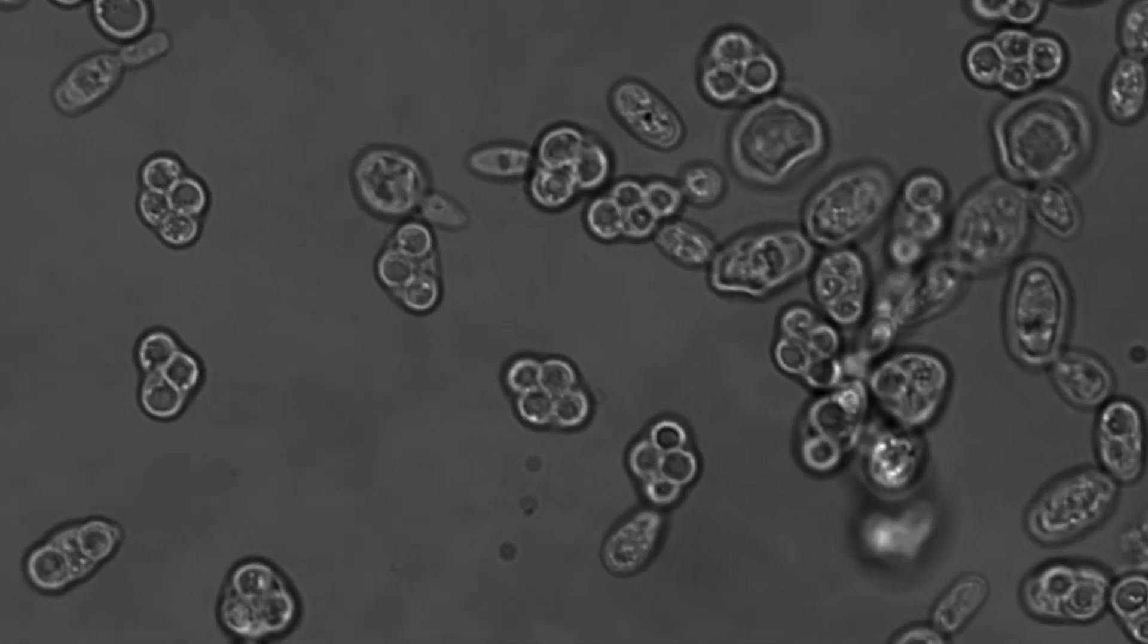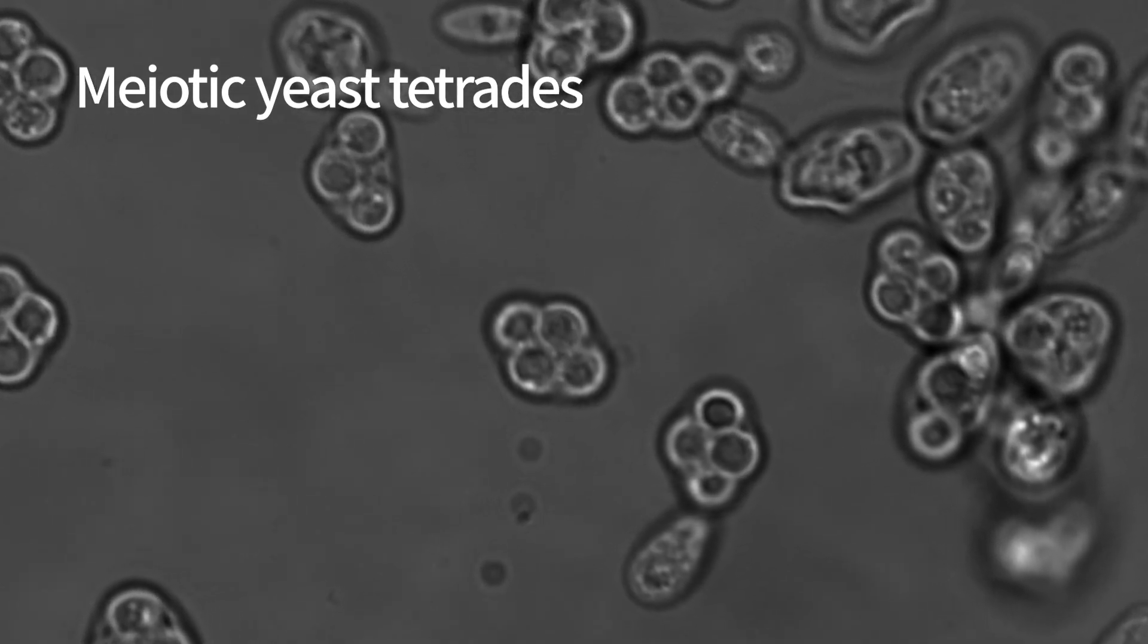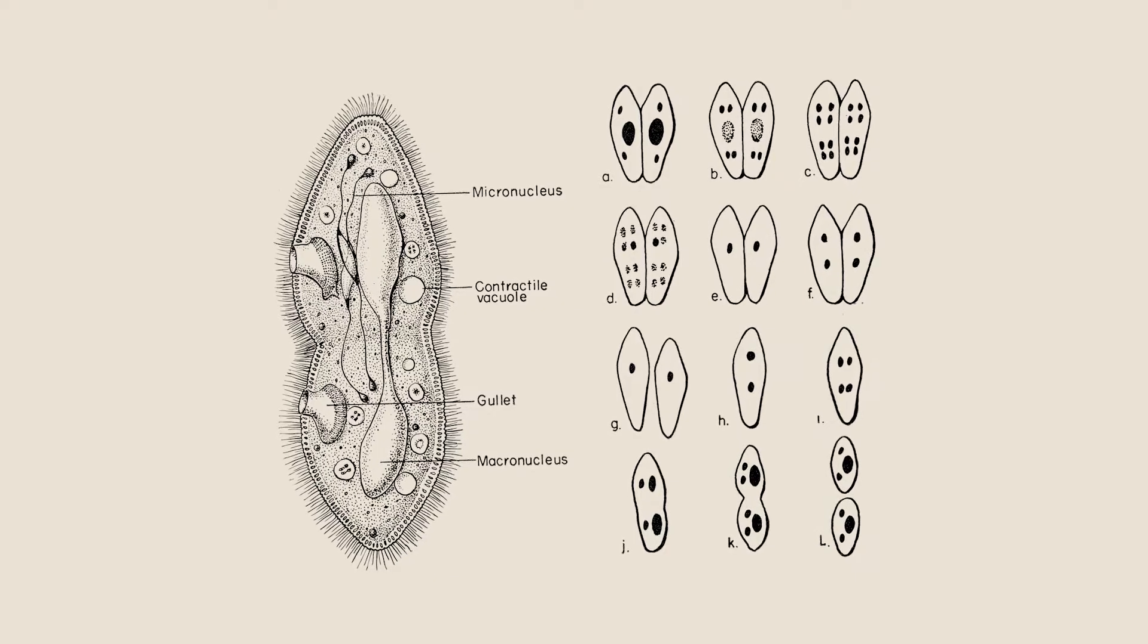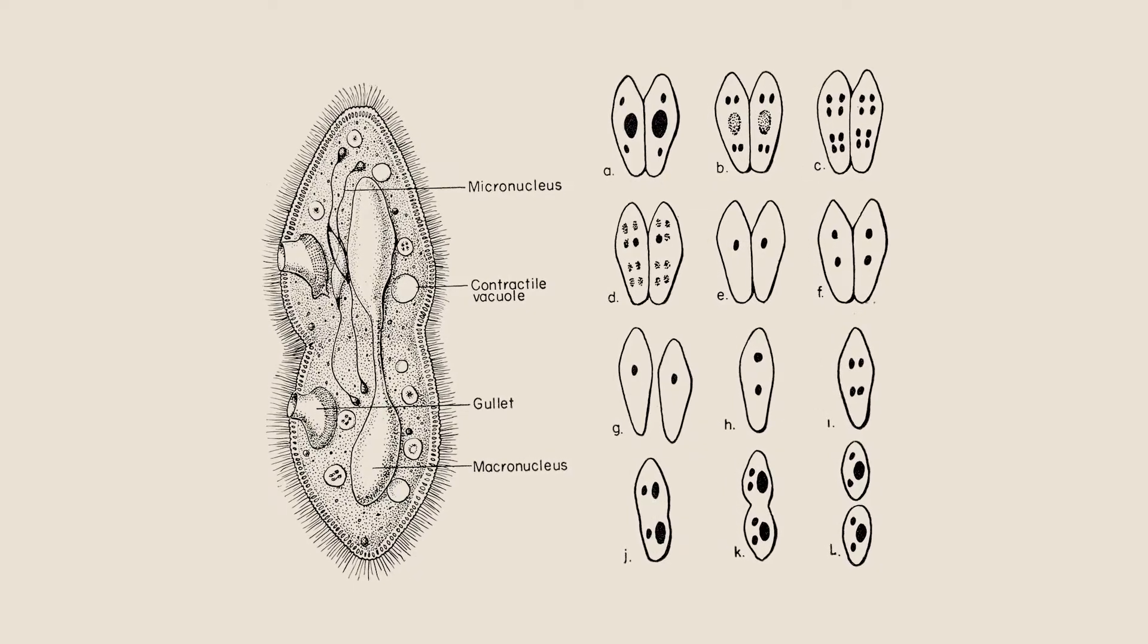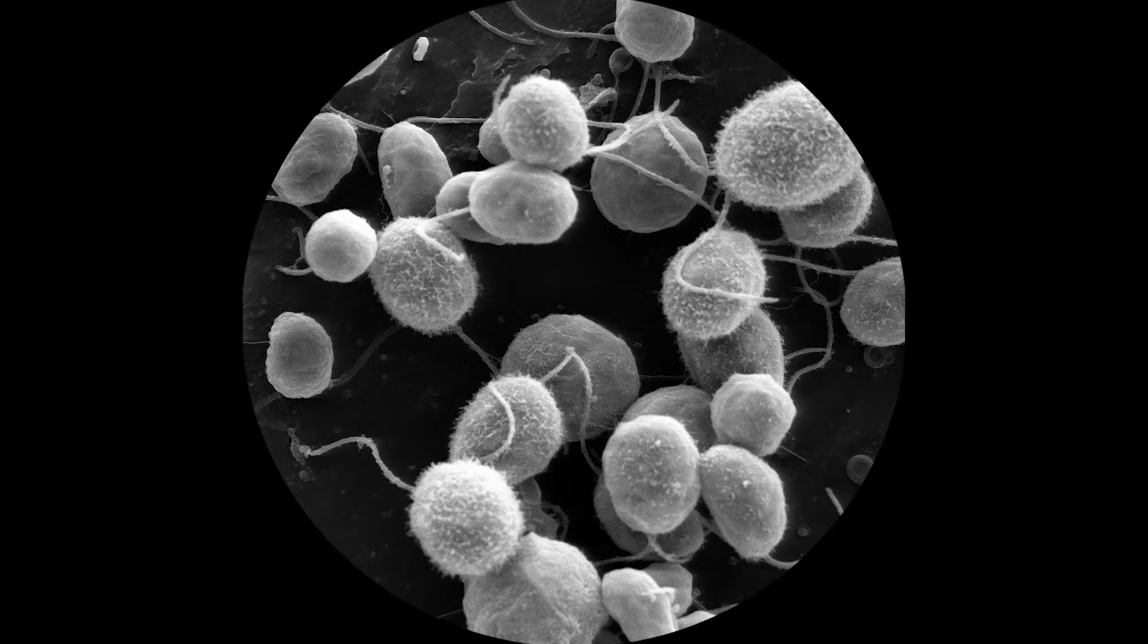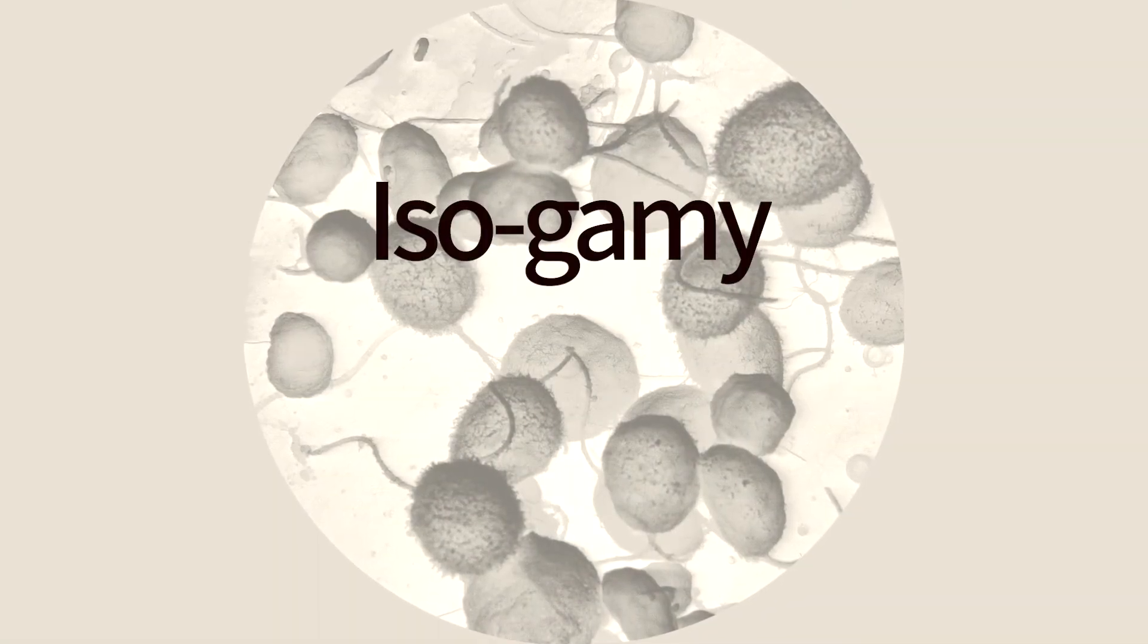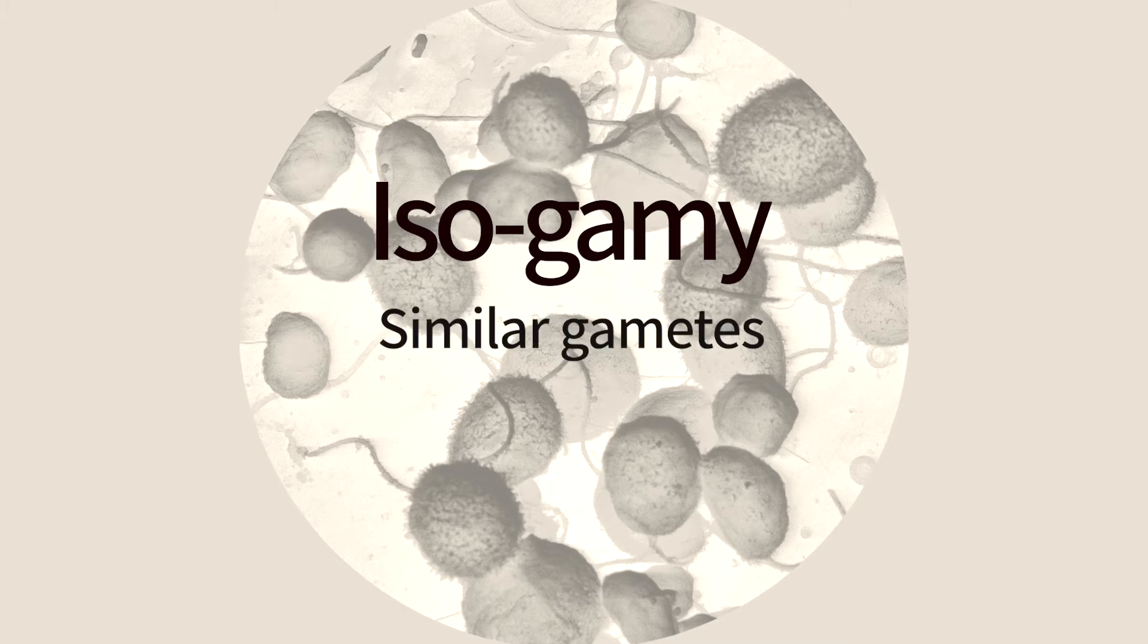This cell can undergo meiosis and give rise to four cells. In yeast and many other unicellular organisms, the difference between the mating types is restricted to a single allele and both types have a similar size and form. This phenomenon is called isogamy, which means similar gametes.